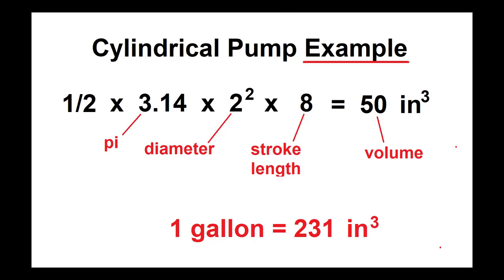Here's a formula for how to figure out the volume of a cylindrical pump. Note that this is just an example - you shouldn't take this to heart as meaning this is the size of your pump. These are just numbers I pulled out of my ass. The formula is 1/2 times pi times the diameter squared times the stroke length, all in inches. In this example, we have 50 inches cubed. We note that a gallon is 231 inches cubed, so this is about one quart per pump.